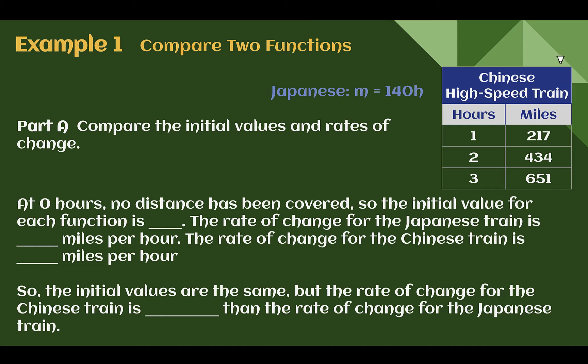In the words, we were told that the Japanese train had an equation of m equals 140h. We want to know first, in part a, their initial values. So the way this is written, pretty much in slope-intercept form, we can have y equals mx plus b. Here we're given the y, it's just a different letter, something, and then another variable, there's your mx part. However, this is your rate of change. We want to know the initial value though, that's your y-intercept. There is nothing at the end of the equation here. So this means that the initial value is 0.